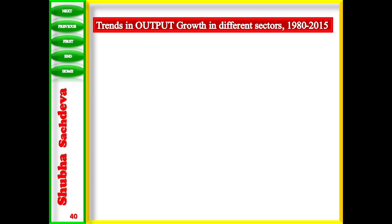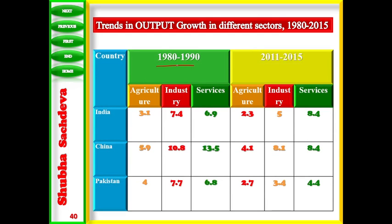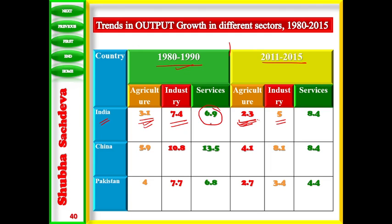Now if we see the trends in output growth in different sectors, we are comparing two time periods: 1980 to 1990 and 2011 to 2015. In India, the output growth in agriculture was 3.1 percent in the earlier period, and it reduced to 2.3 percent. Industry was 7.4 percent and reduced to 5 percent. But when we look at the services sector — the tertiary sector — it increased from 6.9 percent to 8.4 percent. That means the output growth rate of the services sector has increased in India.